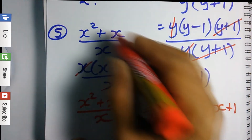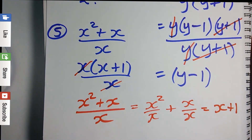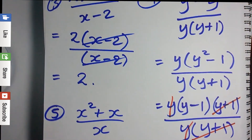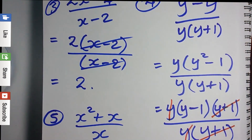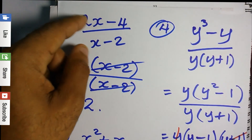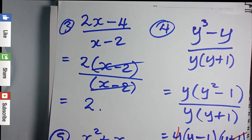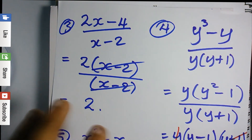So those are some typical factorize and simplify questions. Whenever you see this type of question, apply factorization to the numerator and to the denominator, then cancel where necessary.